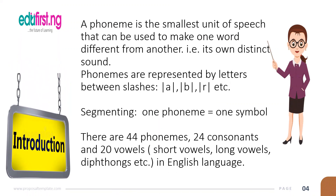What is a phoneme? A phoneme is the smallest unit of speech that can be used to make one word different from another — that is, it has its own distinct sound. Phonemes are represented by letters between slashes, like the letter A for the A sound, the letter B for the B sound, the letter R for the R sound. This is called segmenting in the English language — segmenting means one phoneme to one symbol.